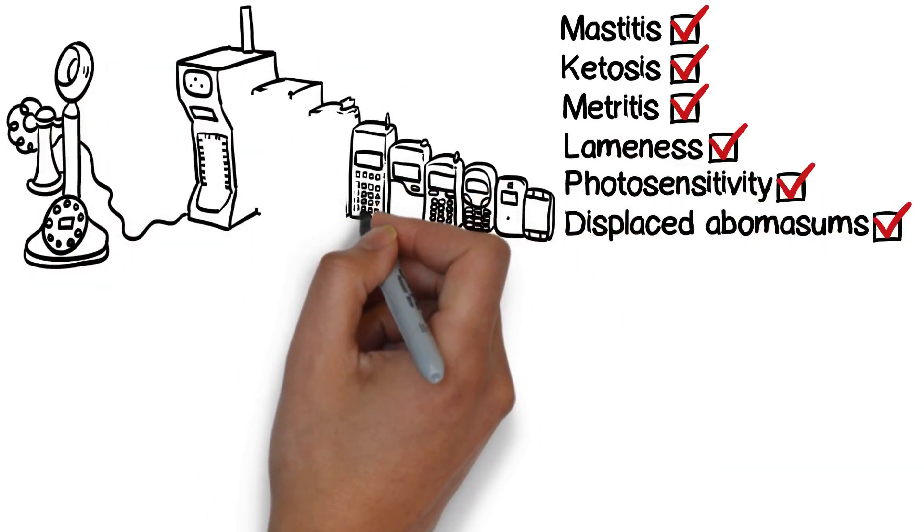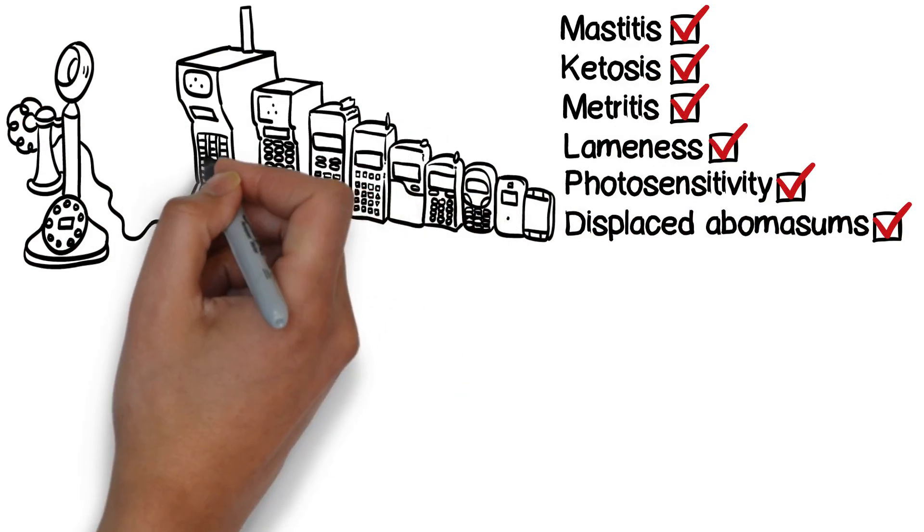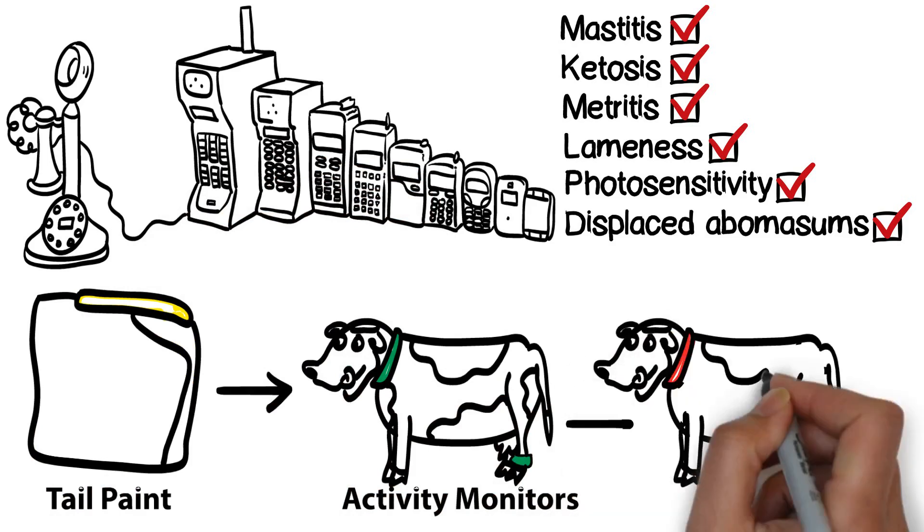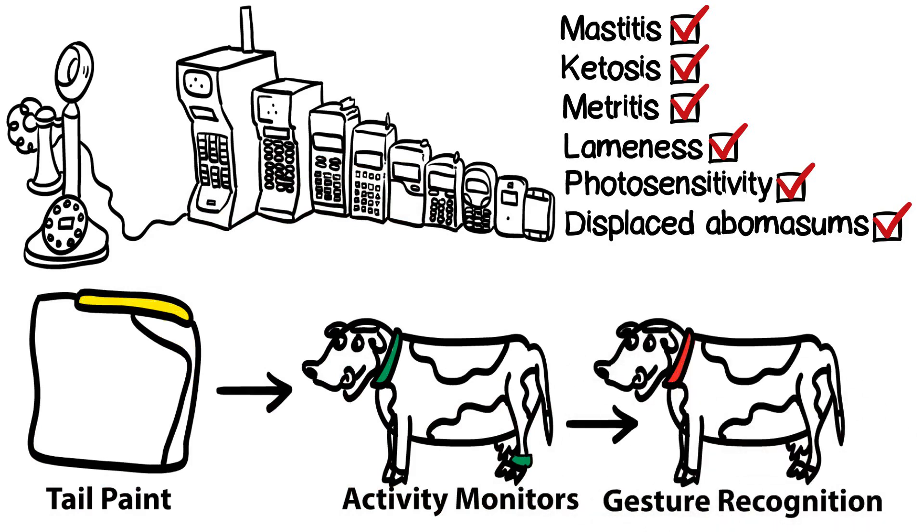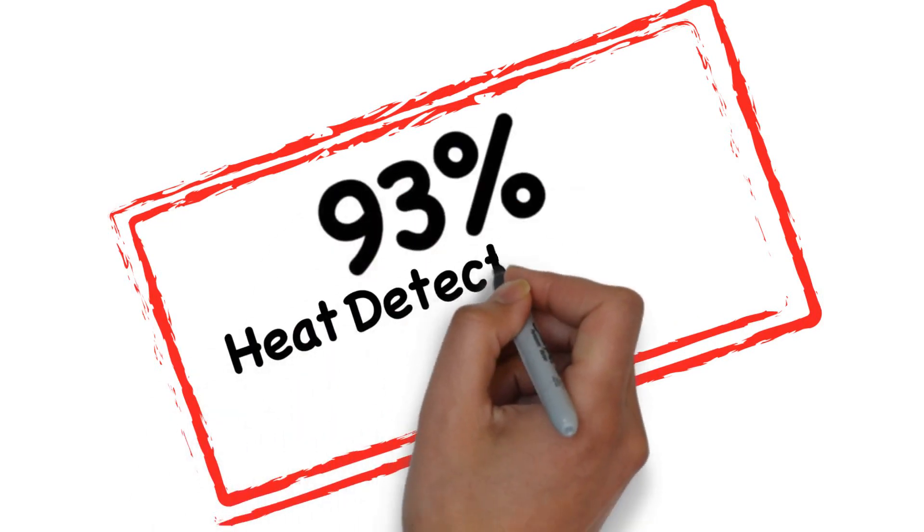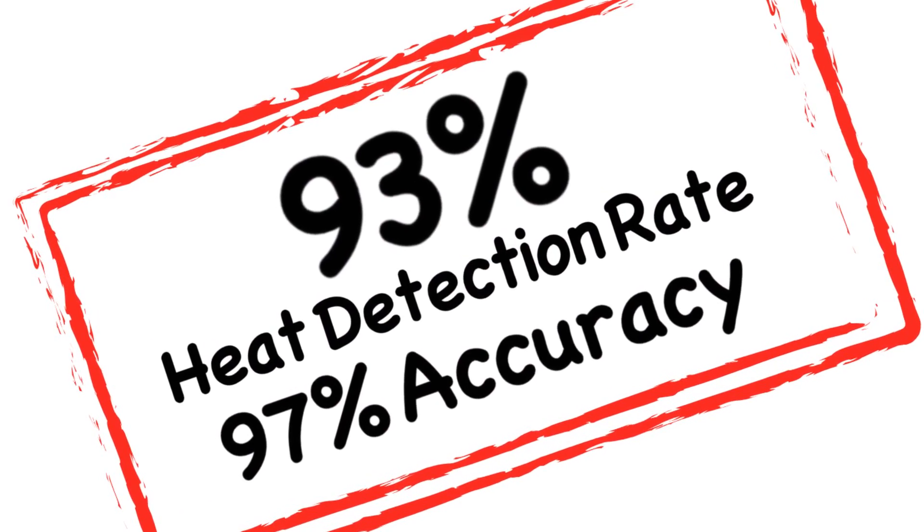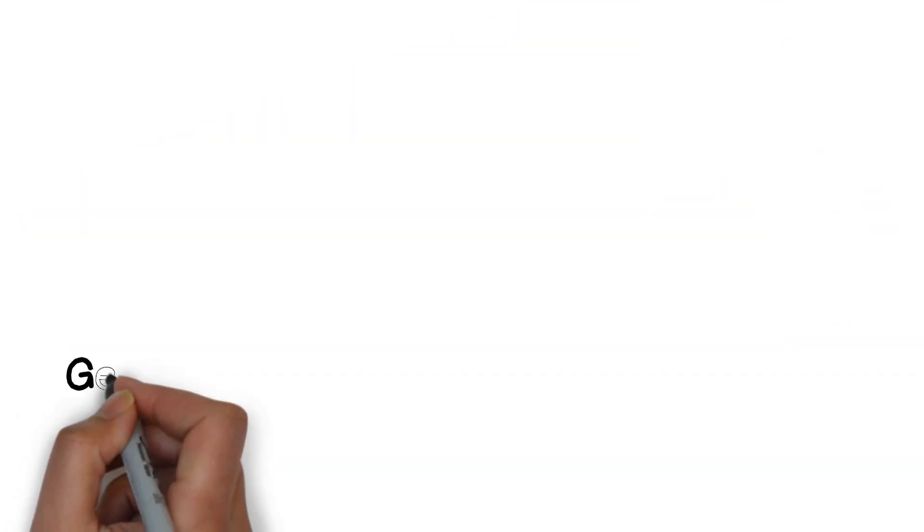The revolutionary new approach of conducting a multi-metric analysis has given Herd Insights the unique ability to accurately work out the health and reproductive status of each cow, enabling Herd Insights to become the most advanced heat detection and health monitoring solution available in the world today.